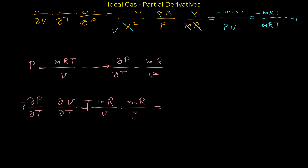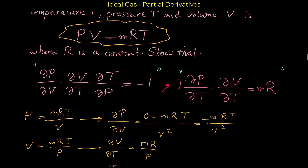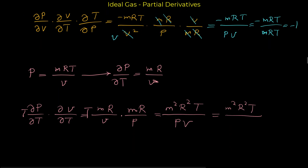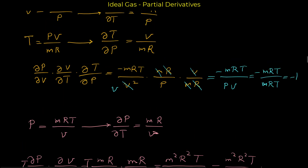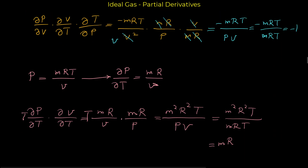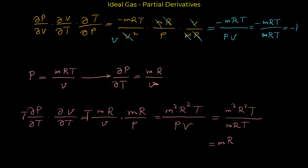In the numerator we have mR times mR times t, which gives m²R²t, all over pv. To simplify, we use the given equation: in the denominator we have pv, and from PV = mRT we know pv equals mRT. So the mR from the numerator cancels with the mR from mRT in the denominator, and t cancels with t, leaving only mR. This equals mR, which is exactly what we wanted to show. The solution is complete.